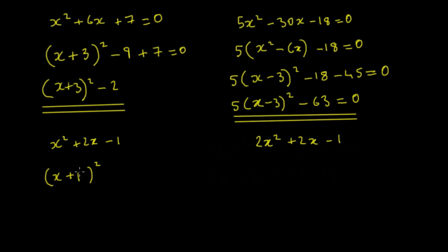We don't need that plus 1, so we're going to take that 1 away, so we've got minus 1, and we've got the original minus 1. So that's going to be leaving us with x plus 1 all squared minus 2.